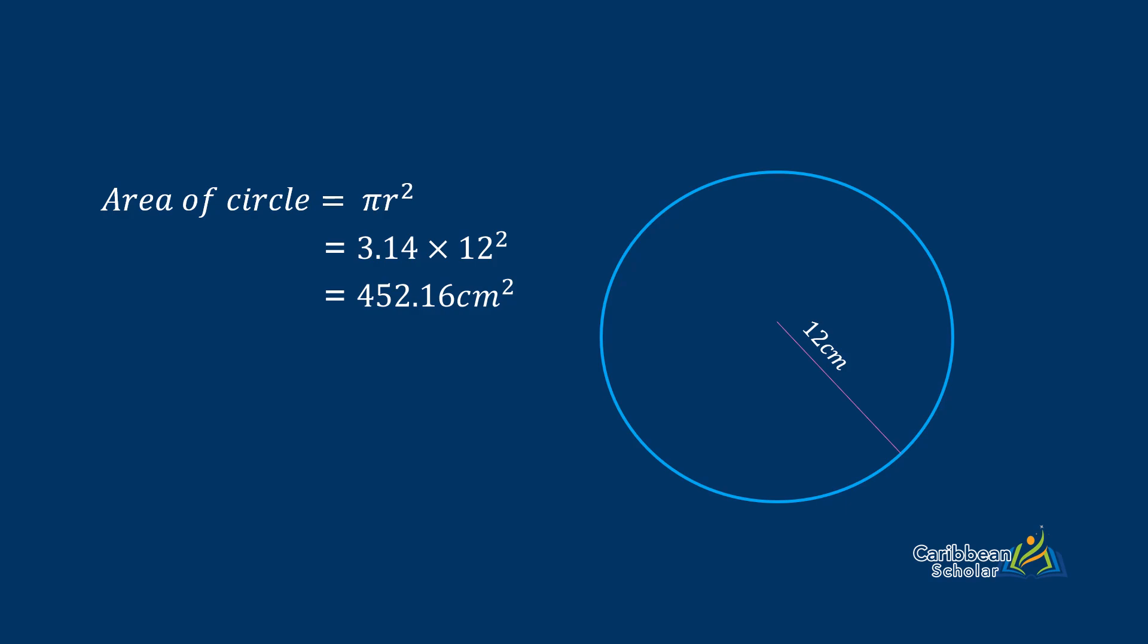Next we do the circumference. The circumference is 2πr. This gives us 2 by 3.14 times 12, which is 75.36 centimeters.